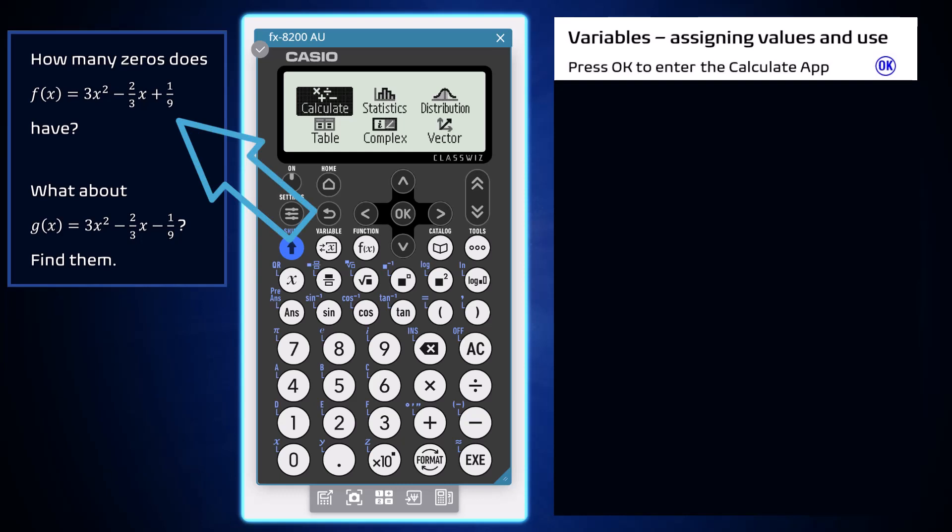This can be done using the Calculate app of a Casio FX-8200 AU, open from the home screen by pressing OK or Execute.